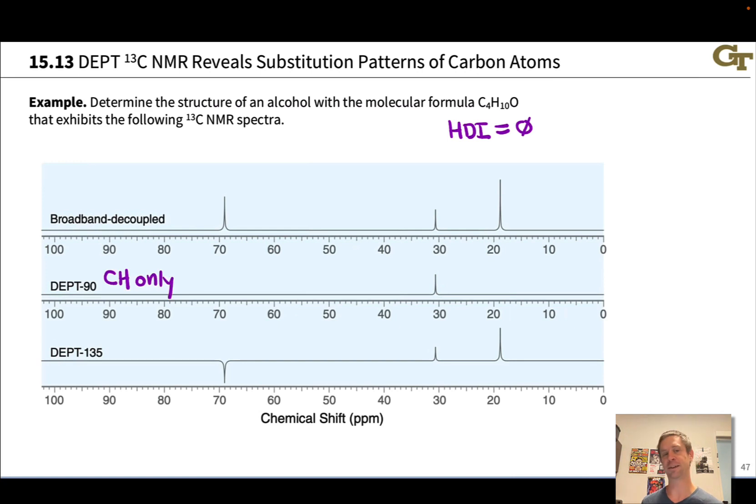Now what are these DEPT spectra telling us? DEPT-90 tells us the signals due to carbons with only one hydrogen attached. DEPT-135 tells us about CH2s, which will go negative, and CH3s, which will remain positive. CHs will also remain positive, but from DEPT-90 we'll already have assigned the CHs. We know we have one CH at a ppm of about 30 or so, showing up in the DEPT-90 spectrum.